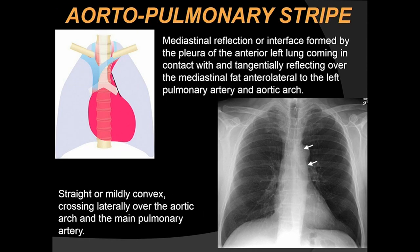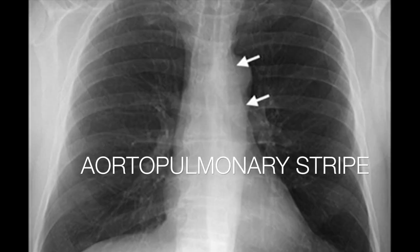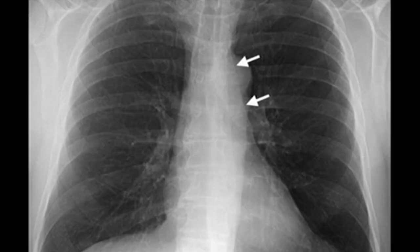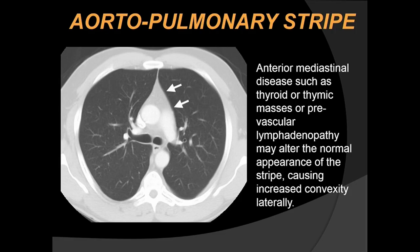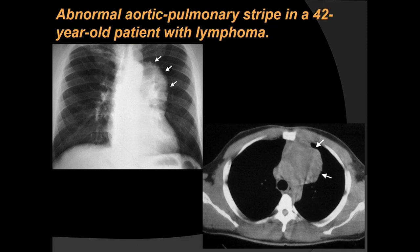The aortopulmonary stripe is a mediastinal reflection interface formed by the pleura of the anterior left lung coming in contact with the mediastinal fat anterolateral to the left pulmonary artery and the aortic arch. It is usually straight or mildly convex and crosses laterally over the aortic arch and main pulmonary artery. It is displaced or thickened by anterior mediastinal disease. Here a displaced aortopulmonary stripe in a 40-year-old patient corresponds to a conglomerated lymph node mass due to lymphoma.